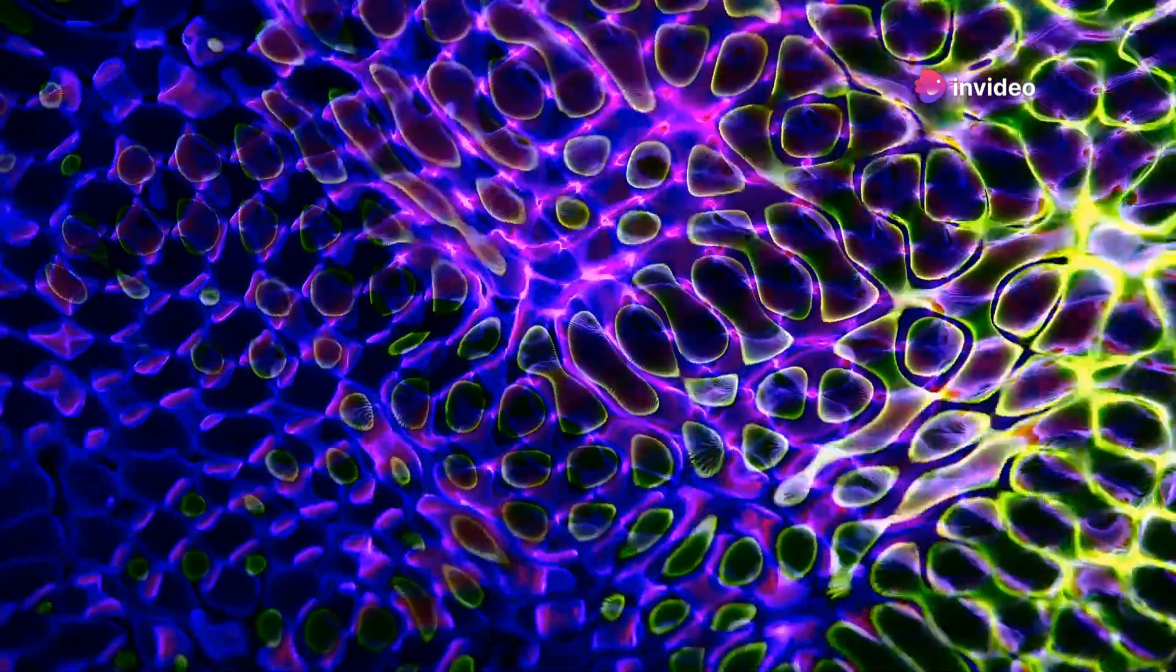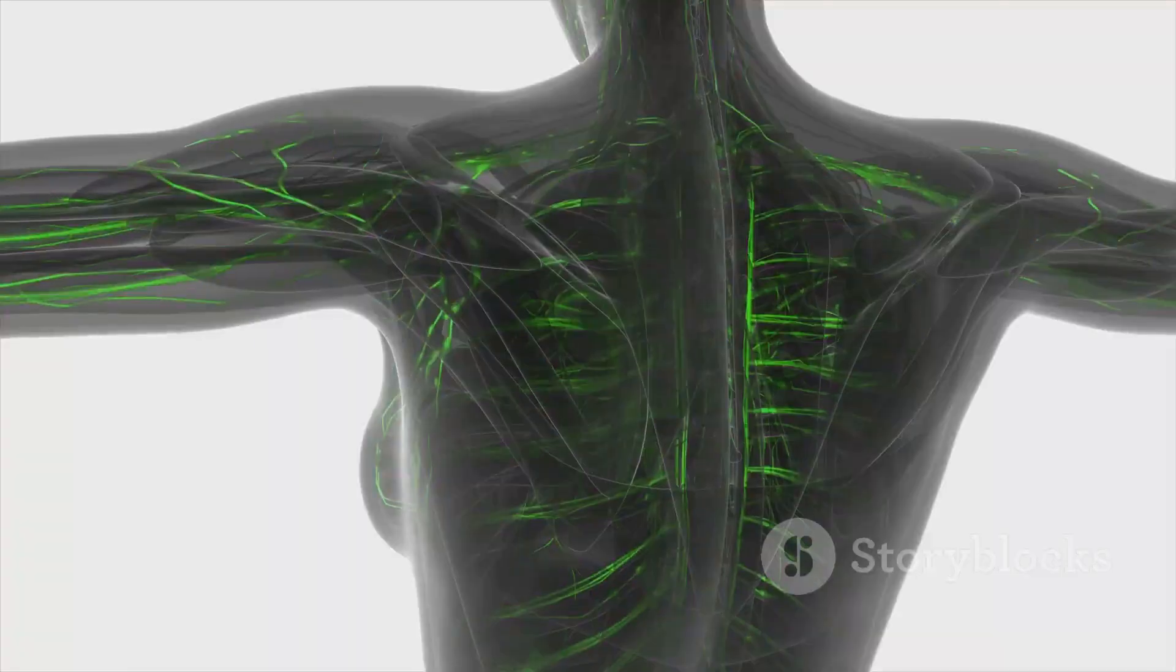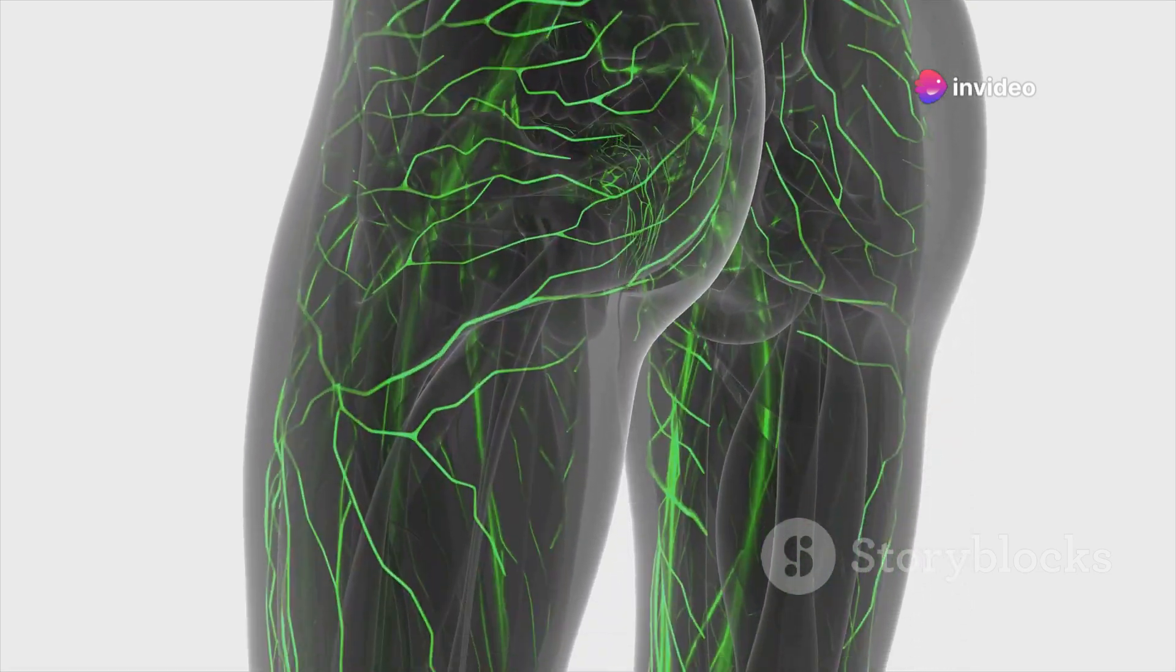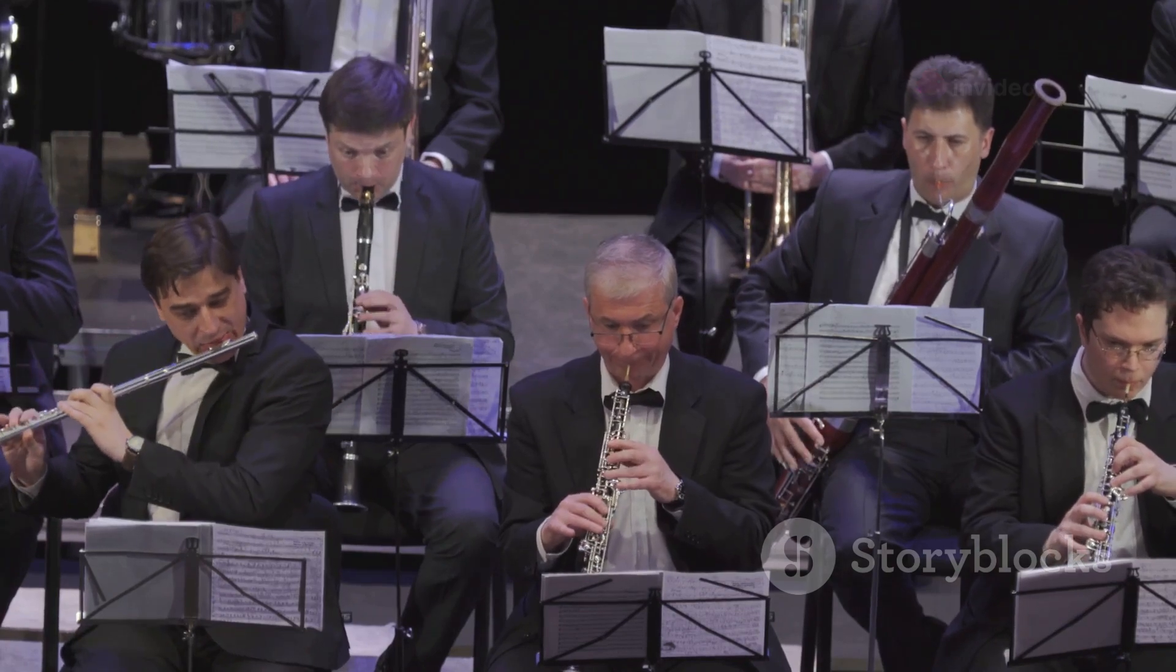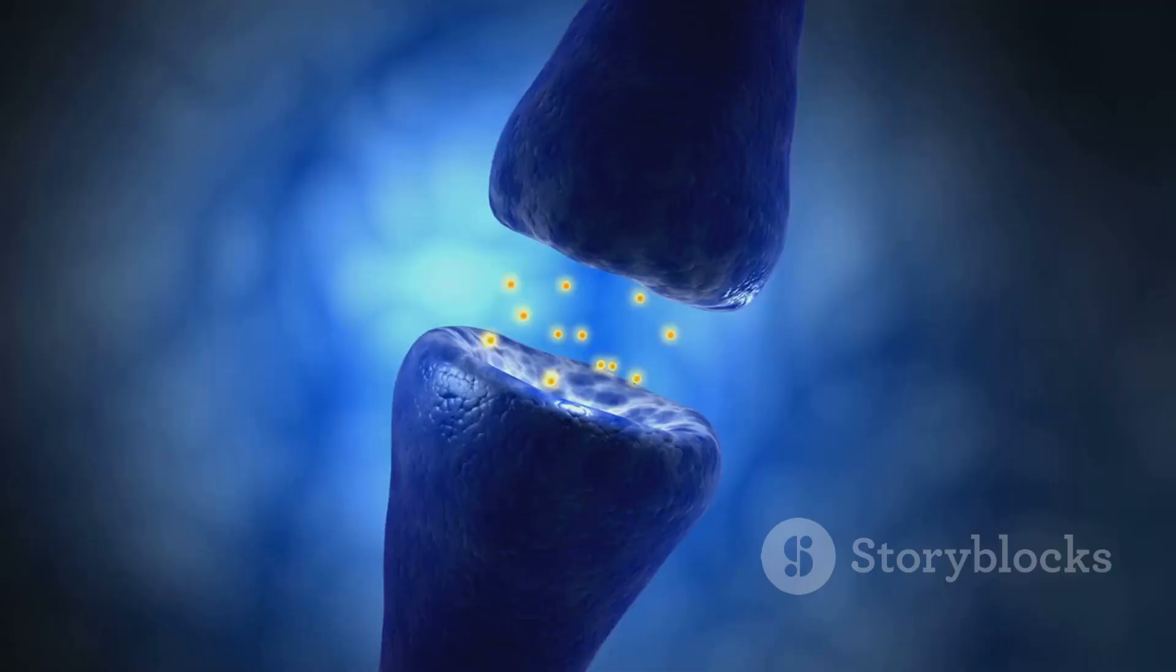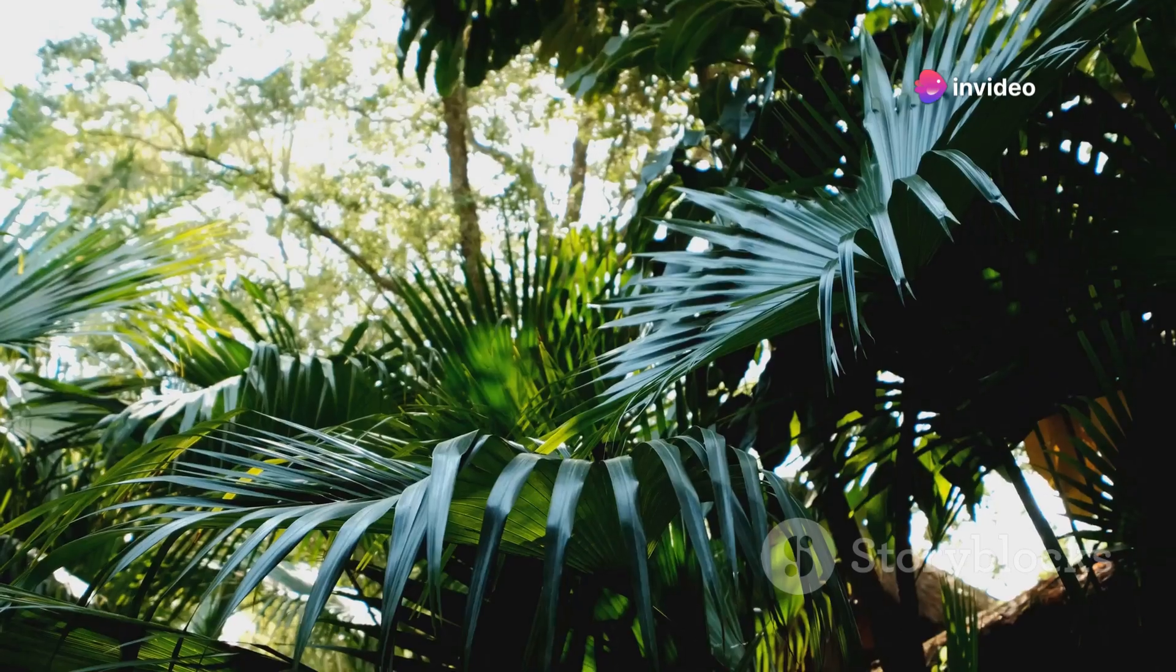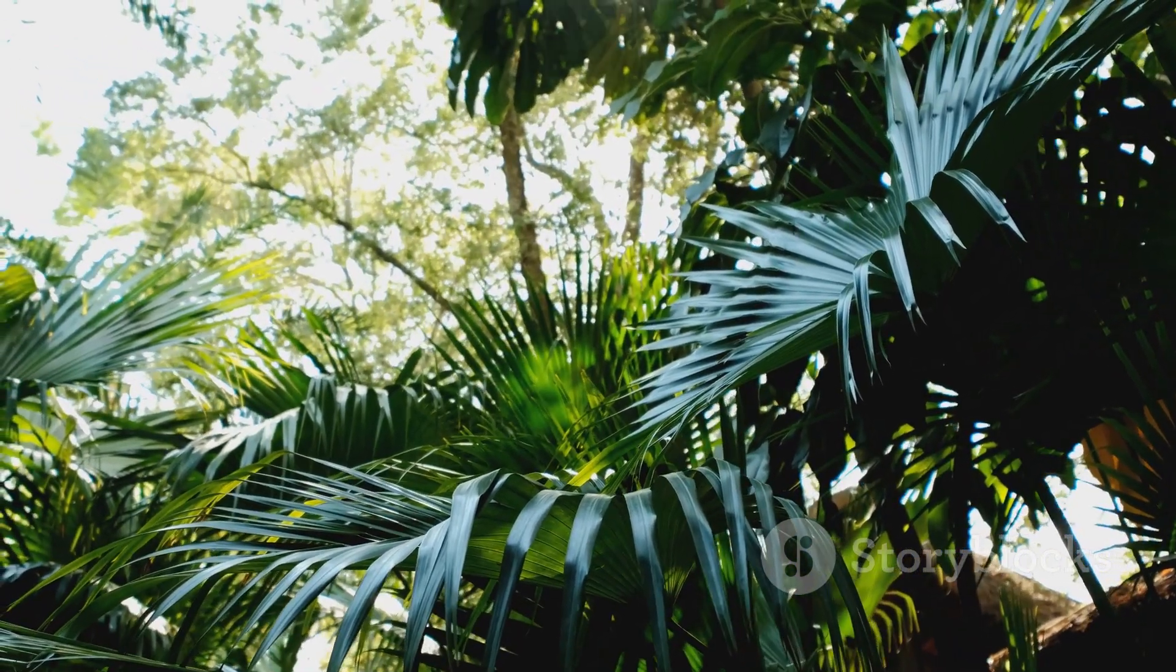The human body is an orchestra of trillions of cells, each playing its part in the grand symphony of life. And just as every instrument in an orchestra must be in tune and working together harmoniously, so too must every cell in our bodies be functioning properly for us to thrive. ATP is the conductor of this cellular orchestra, ensuring that each instrument has the energy it needs to play its part. When ATP levels are high, our cells hum with activity, carrying out their tasks with precision and efficiency. But when ATP levels drop, the music falters, and the symphony of life can fall out of tune.